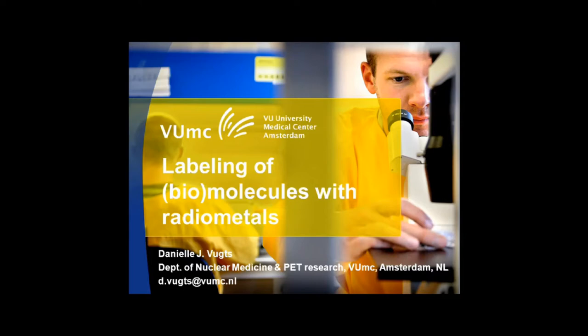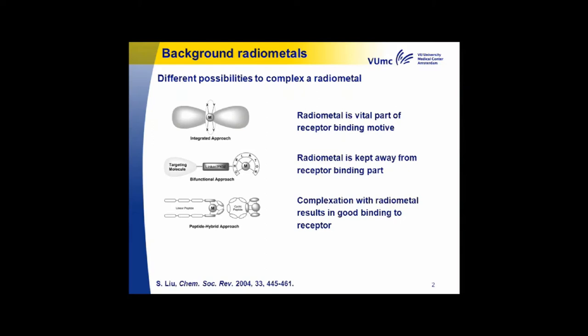That doesn't change the chelate and the chemistry of these radio metals. But before going to that, I want to give you a short overview of what are the typical methods to use a radio metal, and that has been reported in 2004. You can have an integrated approach where the metal is a vital part of your receptor binding motif. You can have a targeting molecule with a linker and a chelator with a metal, which is the bifunctional approach.